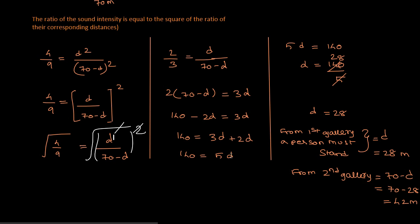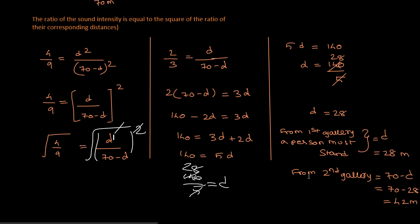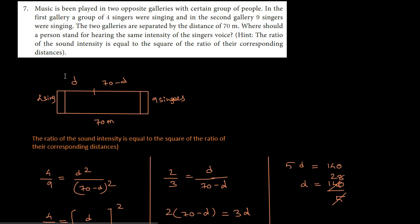So D equals 140 divided by 5. Therefore D equals 28. The person should stand at a distance of 28 meters from the first gallery.